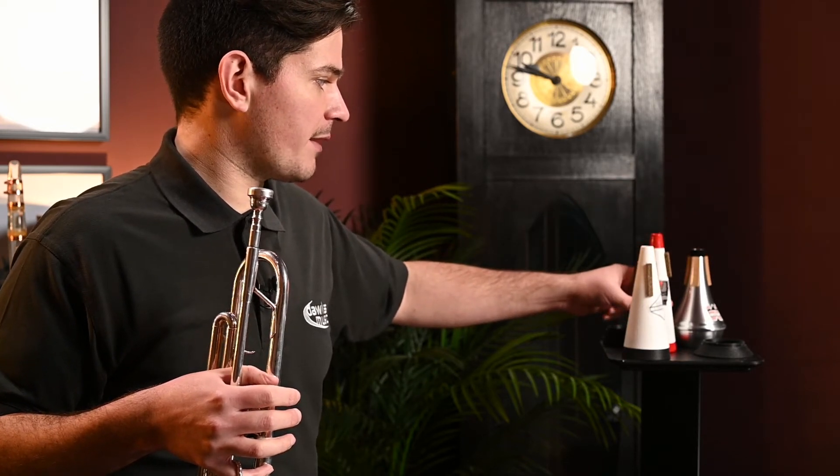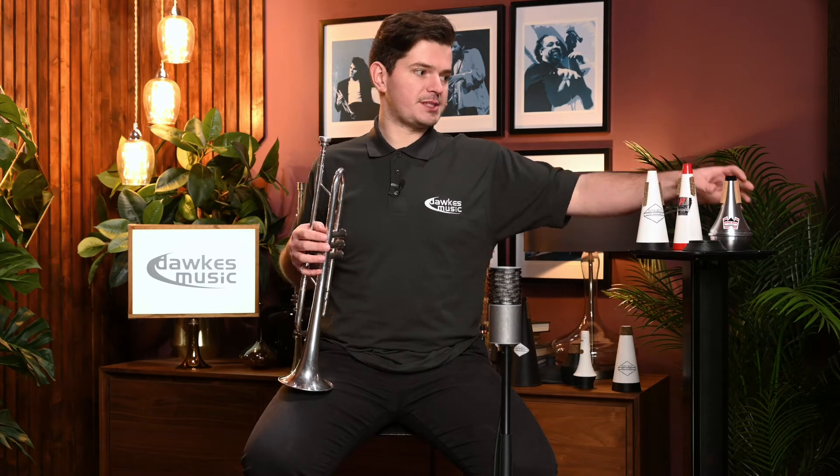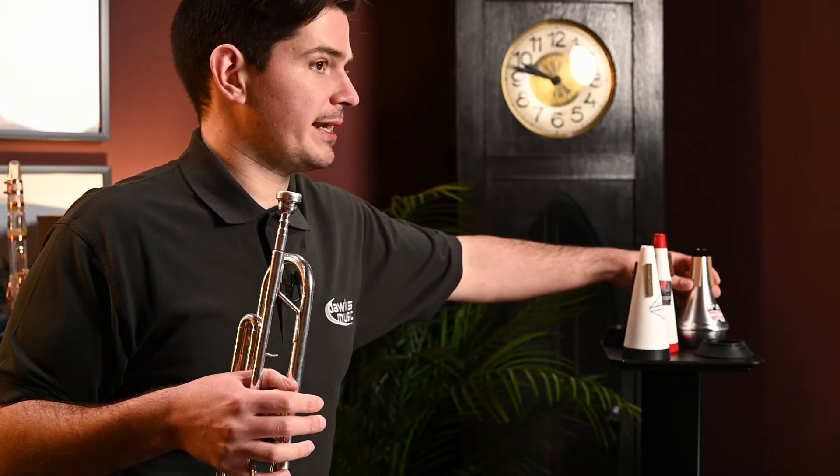The Humes and Berg mute, I think, has a softer tone and a softer timbre to the tone that it produces, whereas the Dennis Wick has quite a metallic tone.